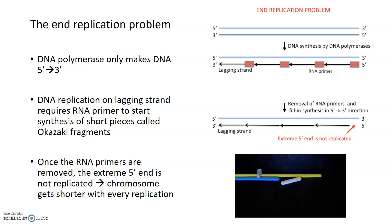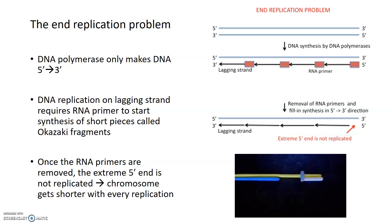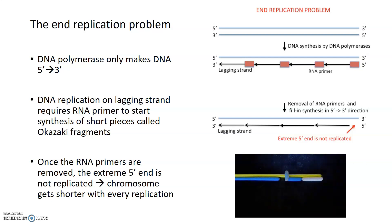We're going to start by talking about the end replication problem. There's a problem with how DNA replication works in that DNA polymerase can only move in one direction. DNA polymerase has to add new nucleotides to the three prime OH, or three prime hydroxyl end, of an existing strand of DNA. It can't make pieces of DNA from nothing — it can only add to a three prime OH end.